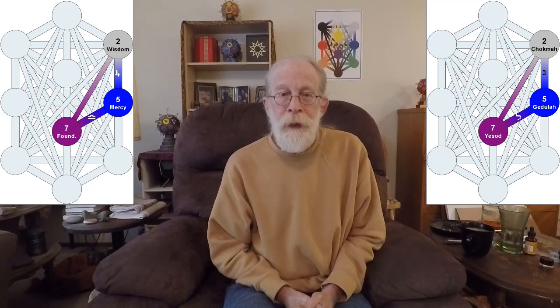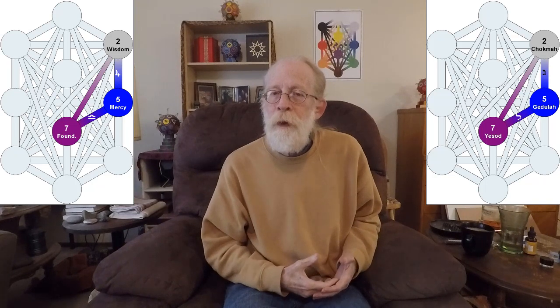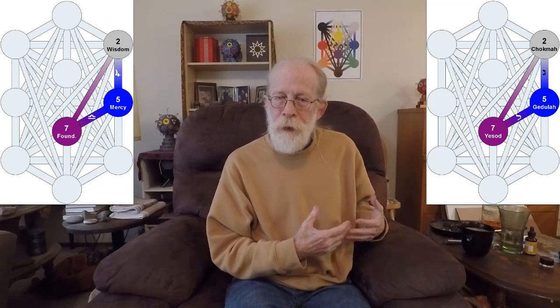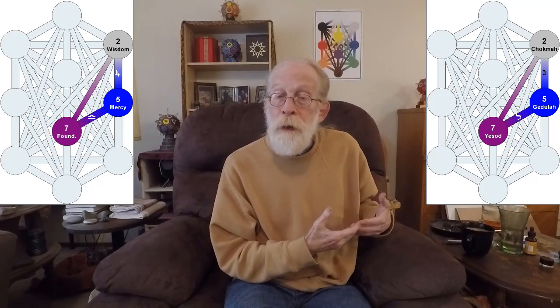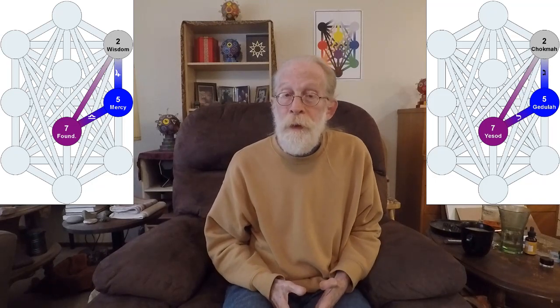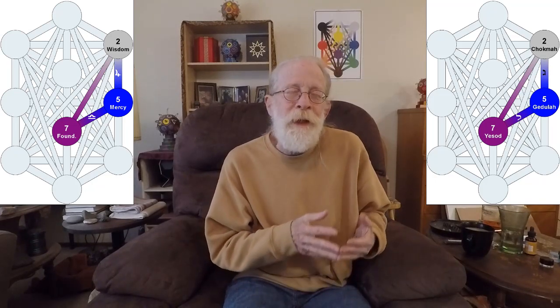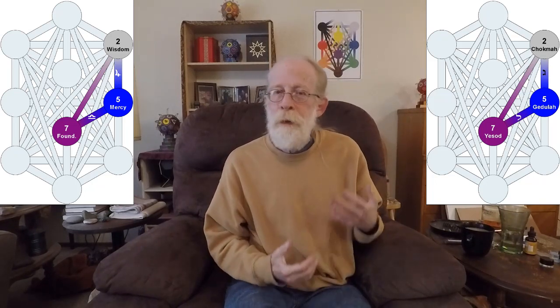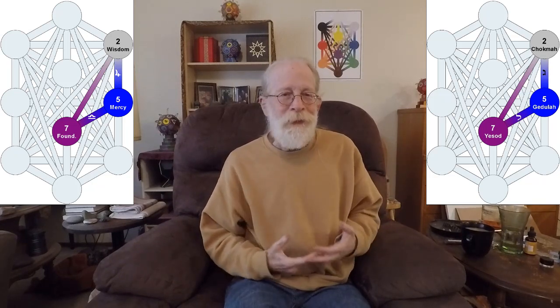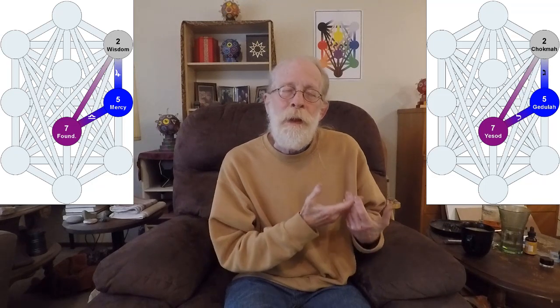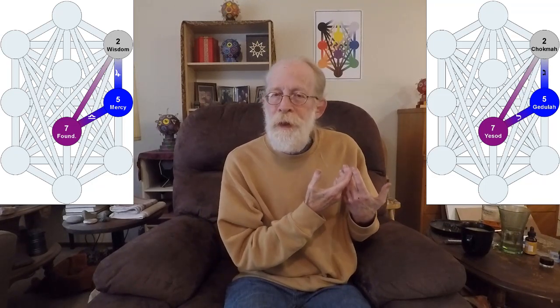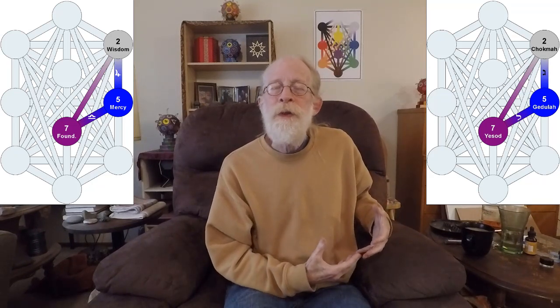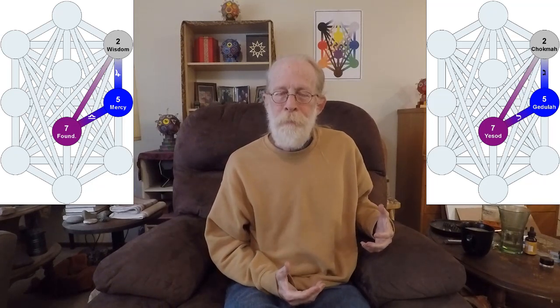The fourth and final gate doesn't involve Binah; instead it involves Chokmah entirely. And this is where the important movement is in the final gate. We start from Gedula, go down to Yesad, come up from Yesad straight up to Chokmah, and then Chokmah down to Gedula. So it's really direct integration of Chokmah in the realm of undifferentiated essential meaning with this urge to balance.